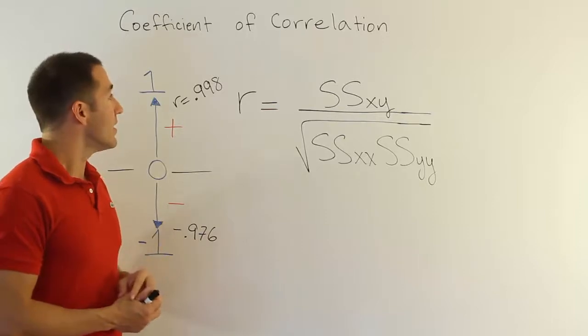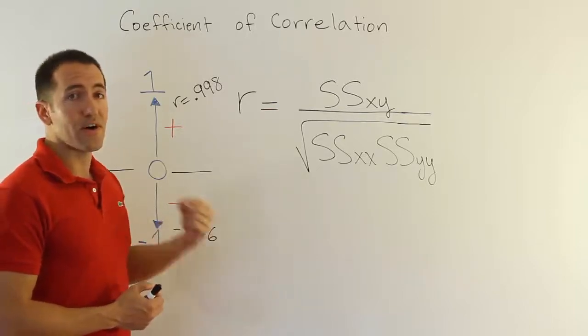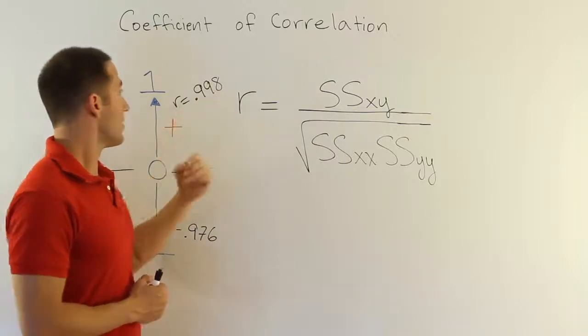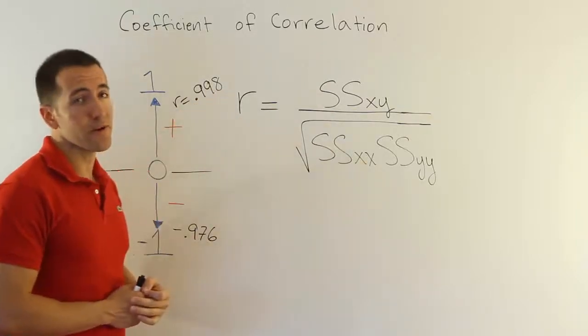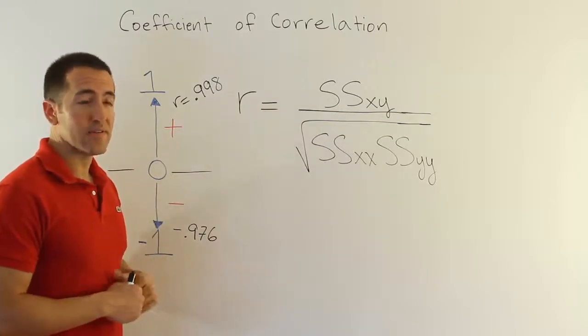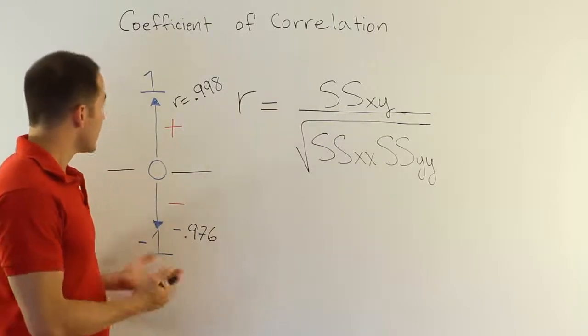But again, correlation is not causation. So make sure that when you interpret r, you don't say, well, gee, the value is 0.998, that means X causes Y. No, it just means that they're highly correlated. They appear together consistently. Okay, so that's essentially it.